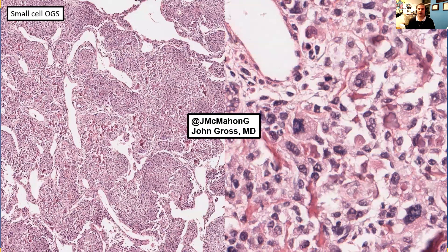Small cell osteosarcoma is shown here in this photomicrograph at intermediate to relatively low power. On the left, these primitive cells are directly producing this purple mineralized osteoid. On the right, you can see how fine and lace-like this mineralized osteoid is in this small cell osteosarcoma variant. Similar to telangiectatic osteosarcoma, small cell osteosarcoma is now considered part of conventional high-grade osteosarcoma.